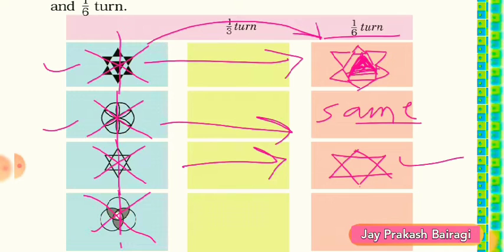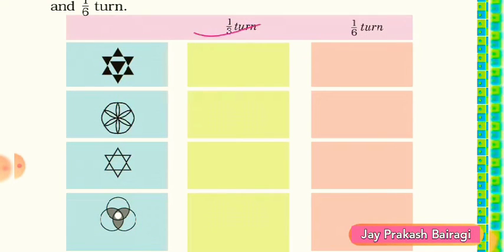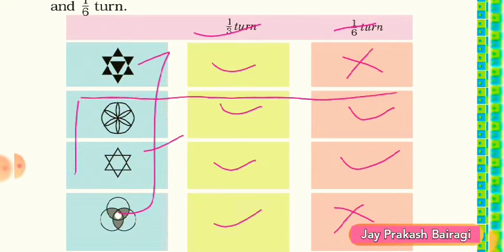Now the third picture — it is triangles, so in each one sixth turn it will look the same. At the last picture, like the first picture, it will also look opposite. It will look something like this — first circle here, second here, and third here. So you found that in one third turn all shapes were the same, but in one sixth turn the first and last were just opposite, while the second and third were the same.